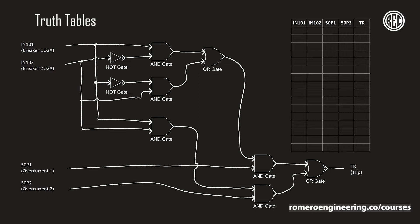With a truth table, what we're going to be doing is listing all the inputs, writing down all the possible combinations for those inputs by counting in binary, and then going through the logic step by step to determine what the output would be for each different combination of inputs.